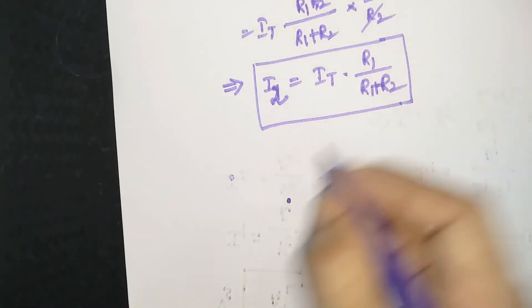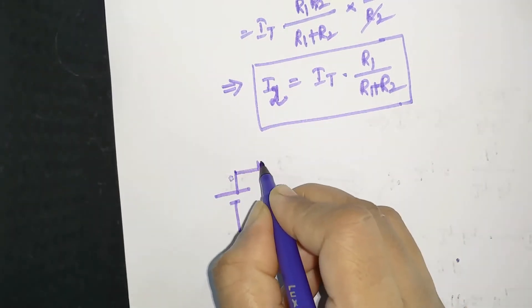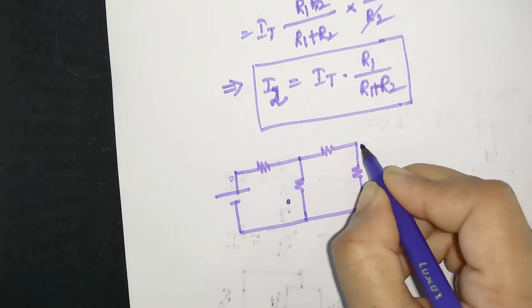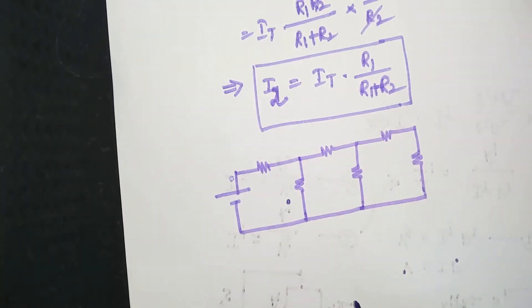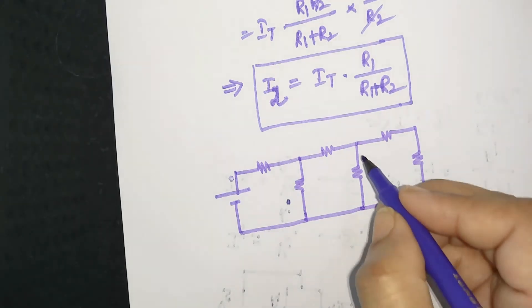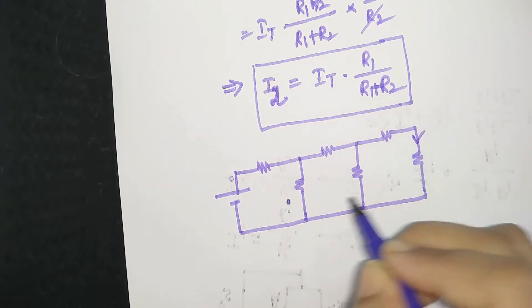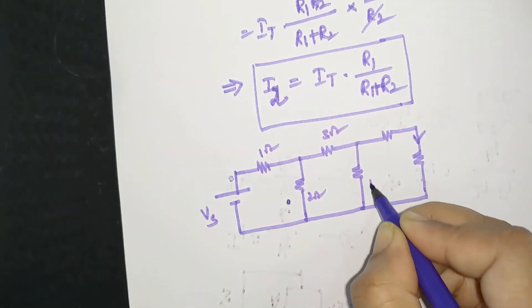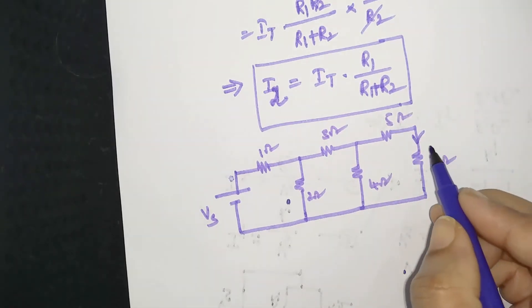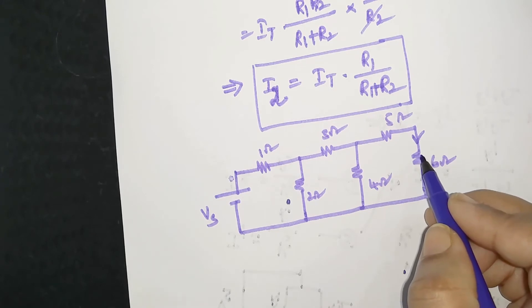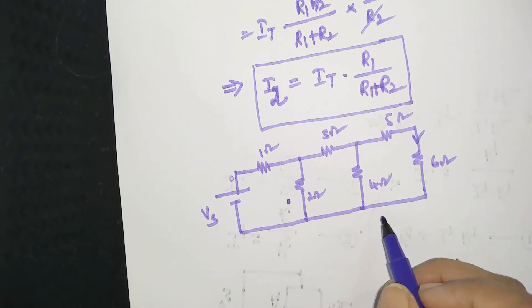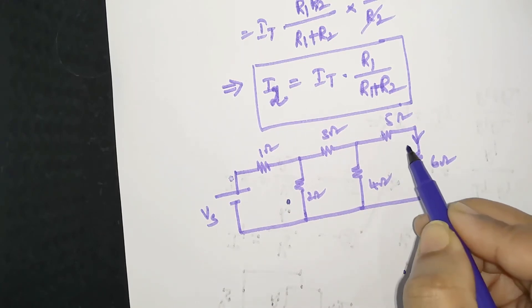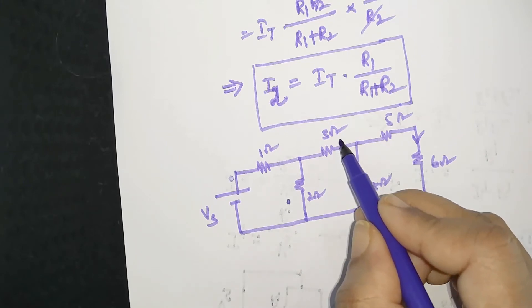Suppose you have a circuit where you are asked to find the current in a specific branch using the current division rule. For example, a circuit with 1 ohm, 2 ohm, 3 ohm, 4 ohm, 5 ohm, and 6 ohm resistors connected to Vs. You are supposed to find the current flowing in the 6-ohm resistor. Here you need to apply a different strategy: 5 and 6 are in series (11 ohms), that is in parallel with 4, in series with 3, in parallel with 2, in series with 1.